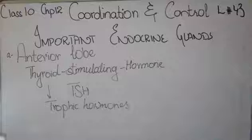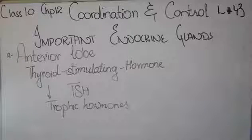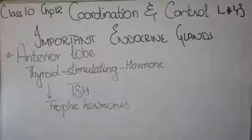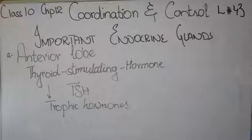So to summarize, the anterior lobe releases two important hormones we have studied: first, somatotrophin, also called the growth hormone, and second, the thyroid stimulating hormone. However, the anterior lobe also releases many other hormones that control the reproductive organs and adrenal glands, which we will learn about in detail later.